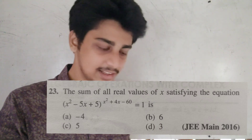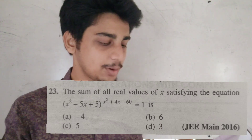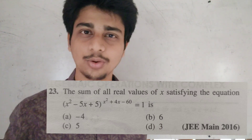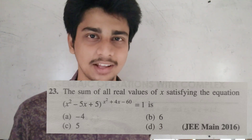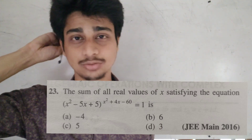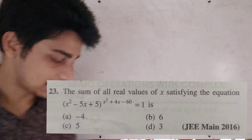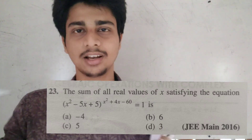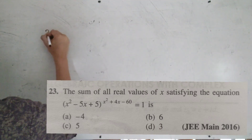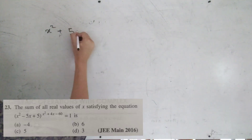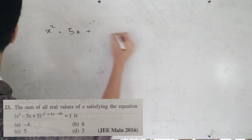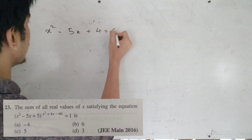Case 1: x² − 5x + 5 = 1, i.e. x² − 5x + 4 = 0, giving x = 1 and x = 4. Case 2: exponent x² + 4x − 60 = 0. Case 3: base x² − 5x + 5 = −1 with the power being even.